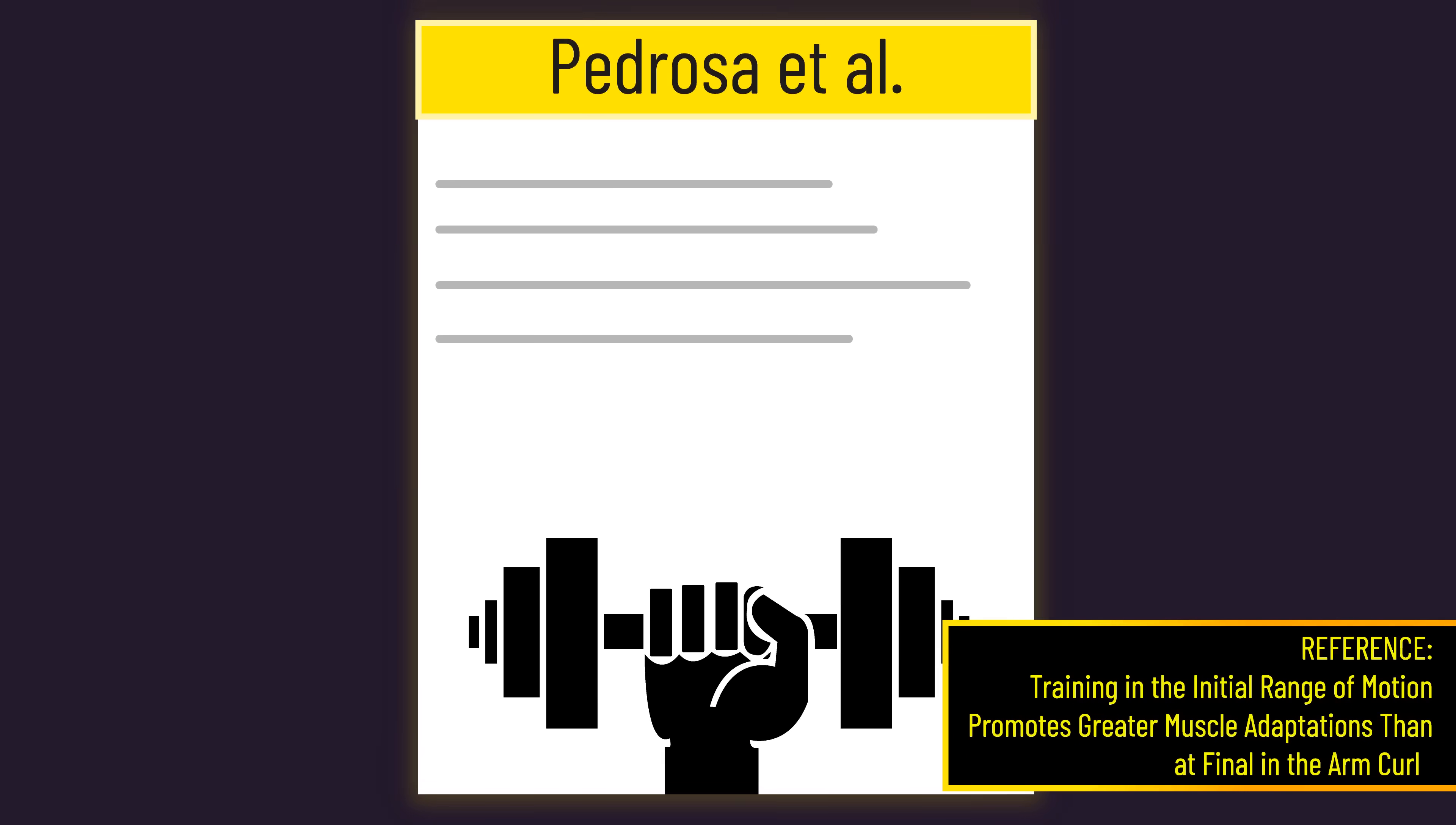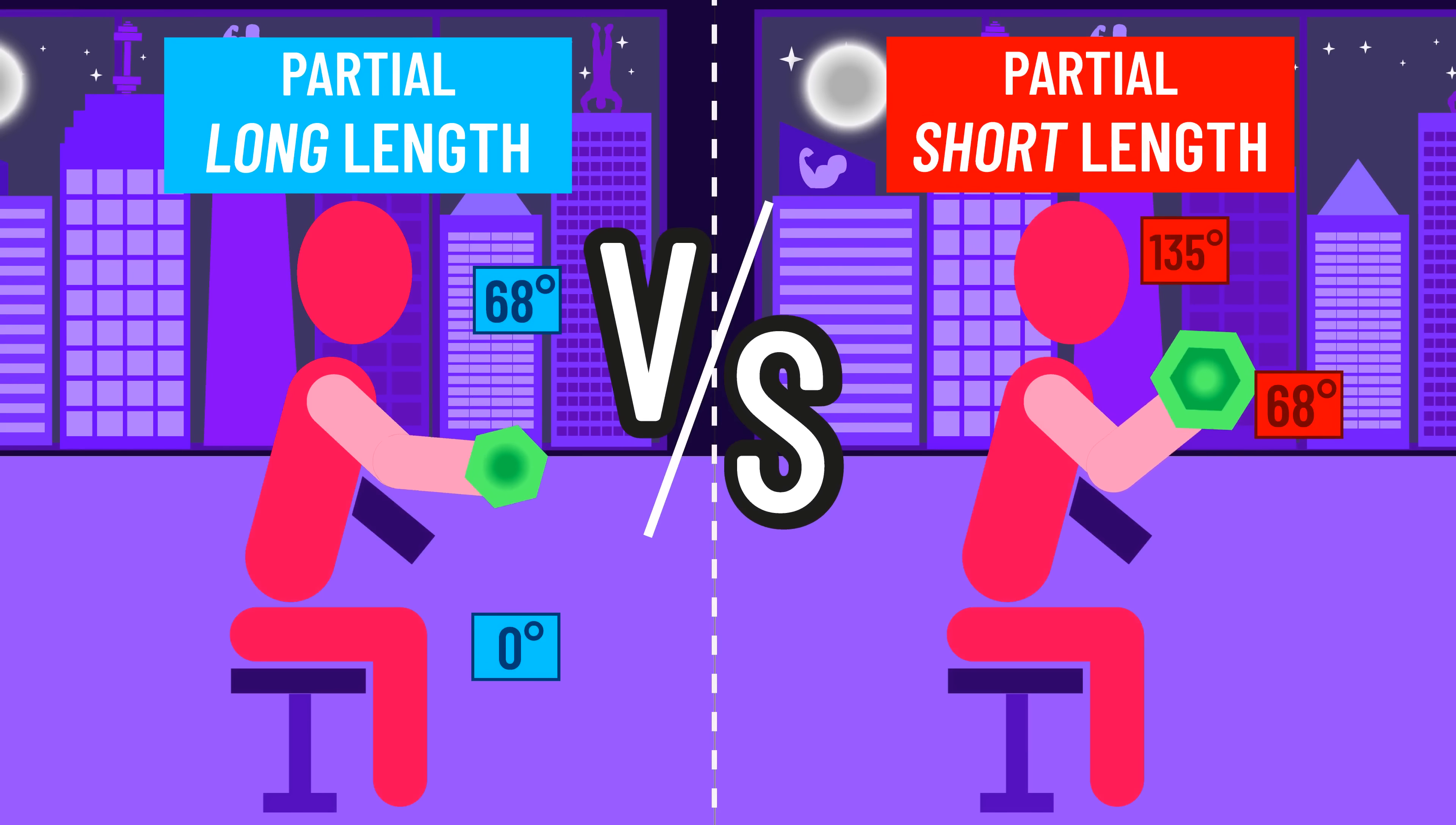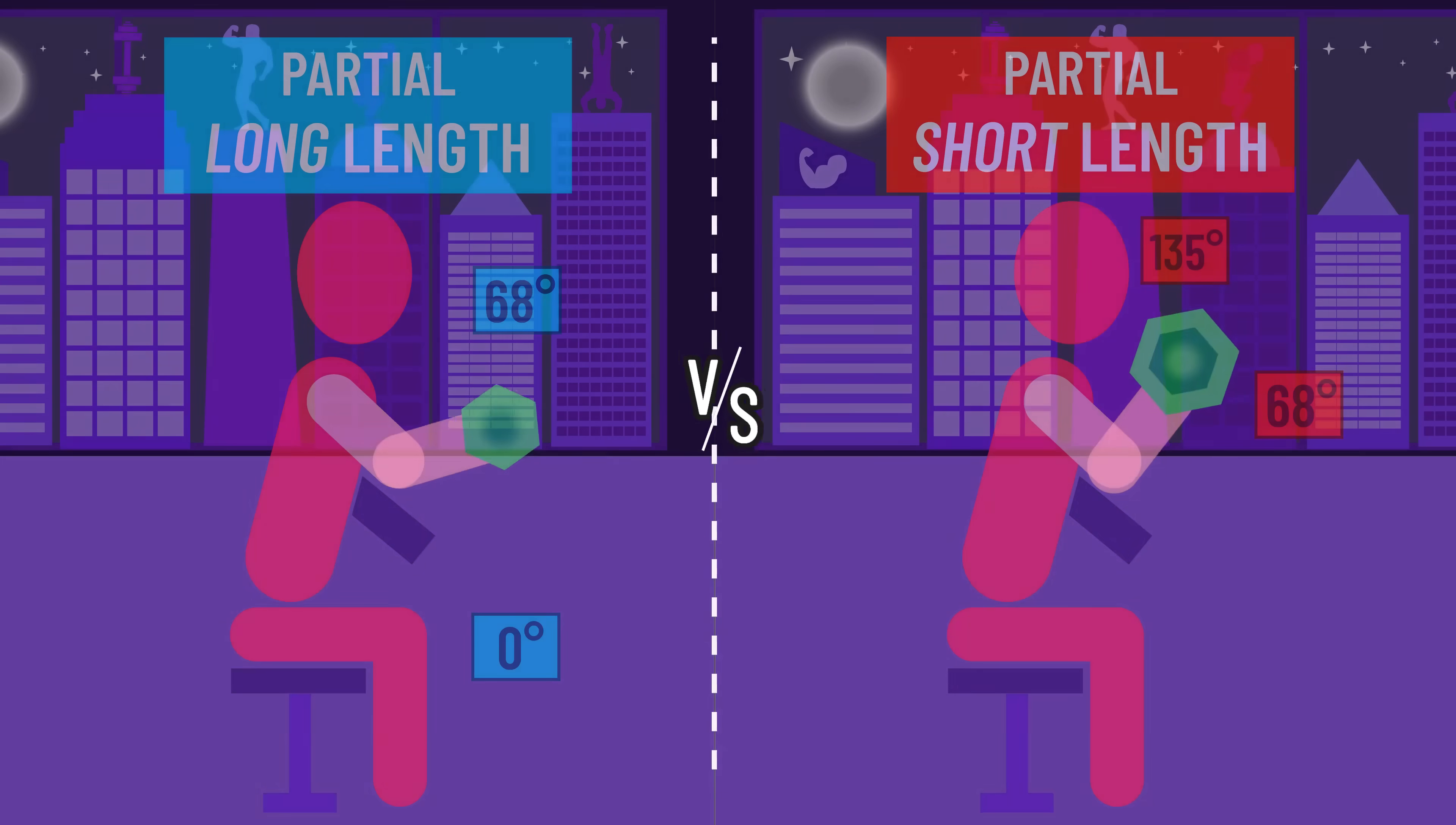For example, this paper, in untrained individuals, compared preacher curls with a partial at short to long lengths. Growth at the 50 percent region was actually similar between both, while growth at the 70 percent region was much better with the partials at long lengths.